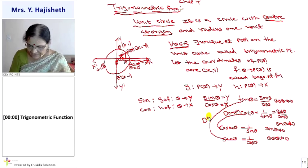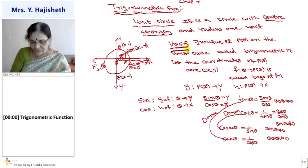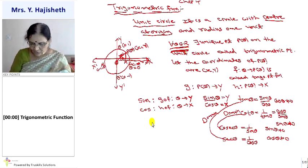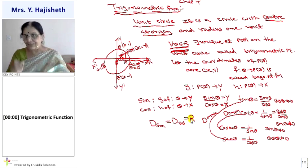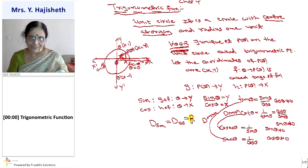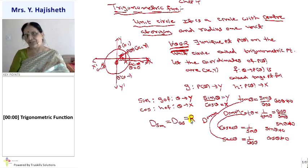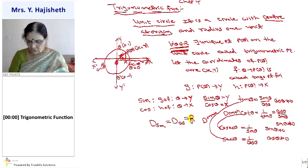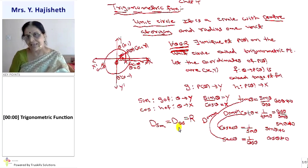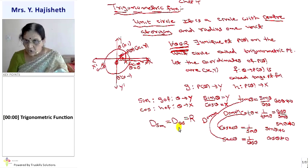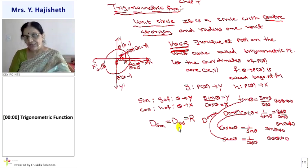The domain of sin and cos are also the same — both are defined for every theta belonging to ℝ, so the domain equals the set of real numbers. The domain of tan and sec are the same, and the domain of cot and cosec are the same. With the help of the domain of sin and cos, we can find out the domains of tan, cot, cosec, and sec — I will show you that later.